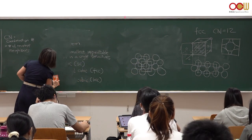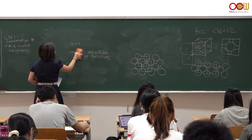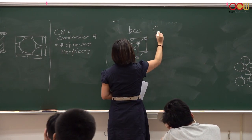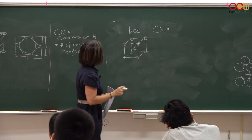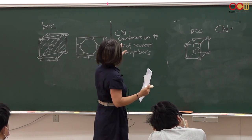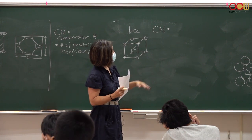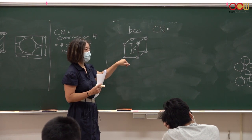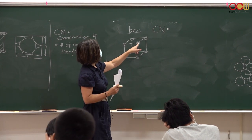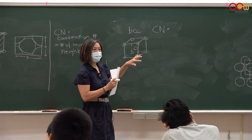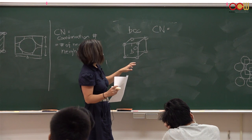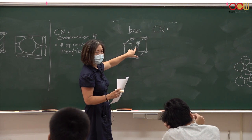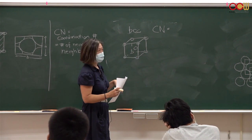For BCC, we use the easiest atom to analyze — the body-centered one in the middle. It touches all eight corner atoms. So the coordination number for BCC is 8.